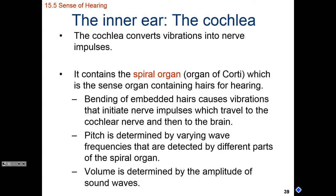Within the cochlea — the part of the inner ear we use to hear — we have something known as the spiral organ, also called the organ of Corti. This spiral organ takes vibrational waves through the fluid of our cochlea and converts them to electric signals we interpret as sound. As the cochlear fluid vibrates, little hairs called stereocilia bend back and forth — these are mechanoreceptors that turn vibrational waves into electric signals.